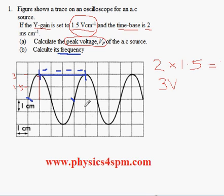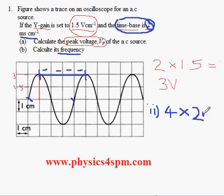The time base represents 2 milliseconds per centimeter, which means if we have four boxes, each box is equivalent to 2 milliseconds. Therefore, the period T is equivalent to 8 milliseconds.